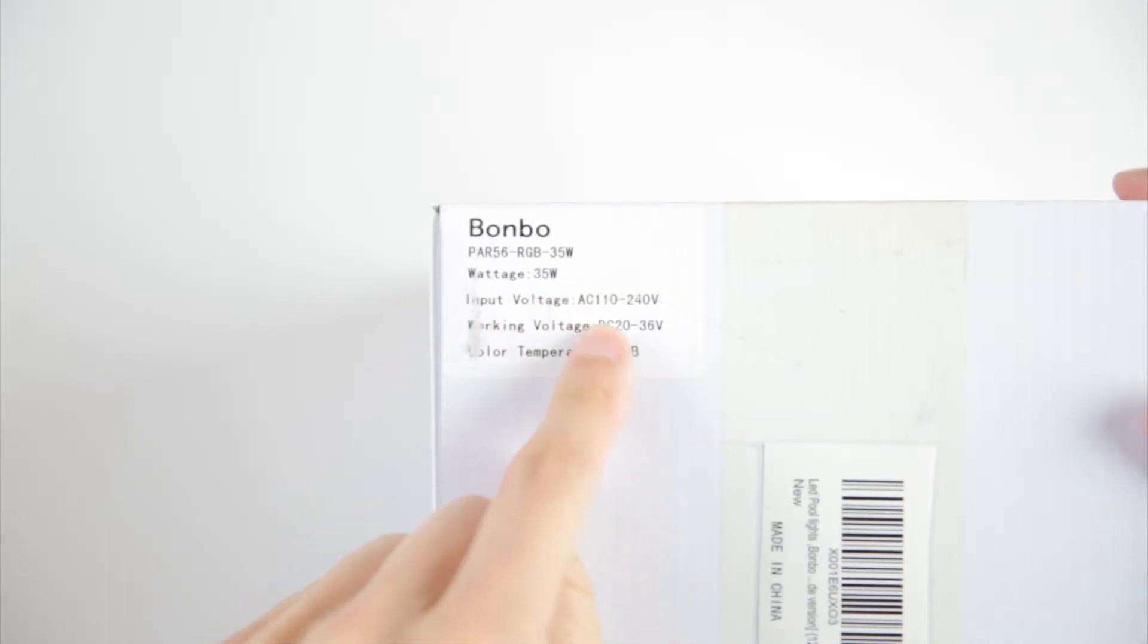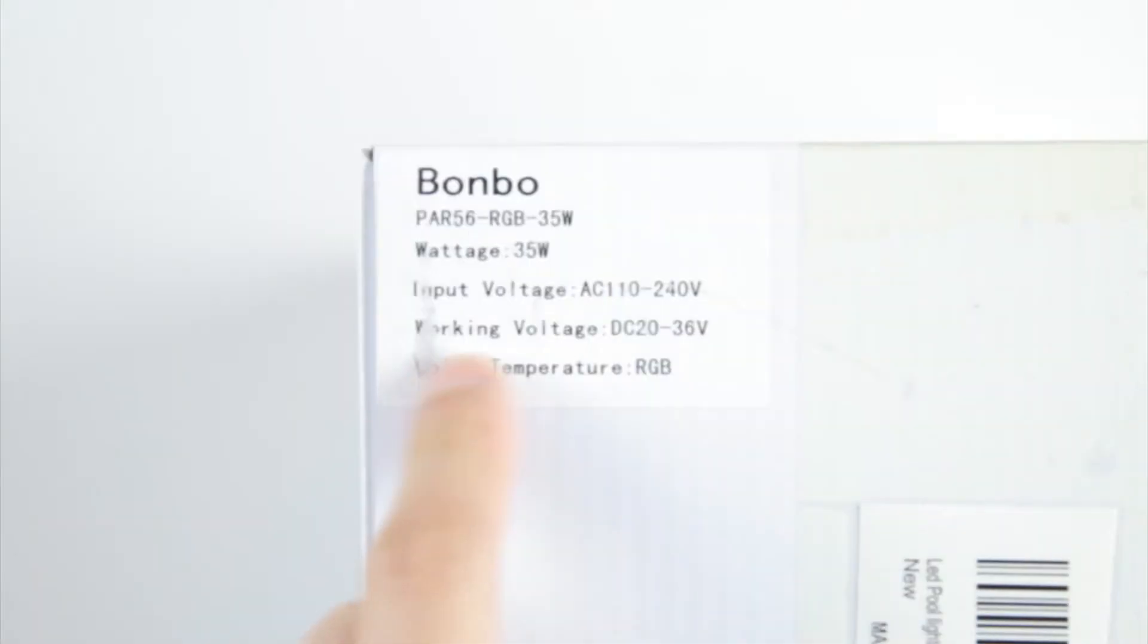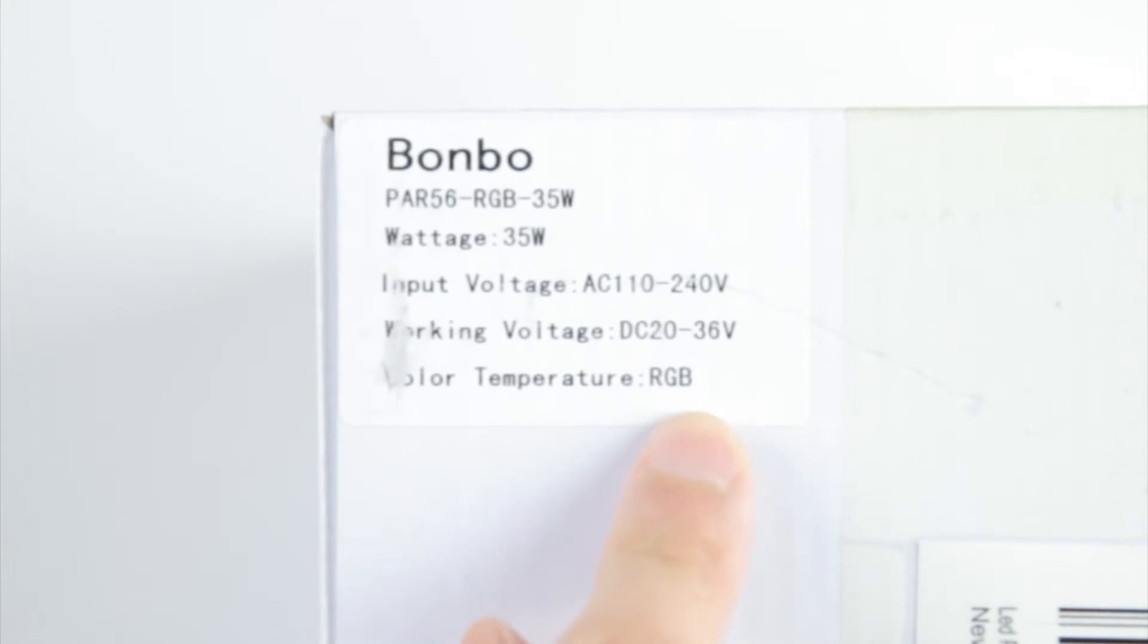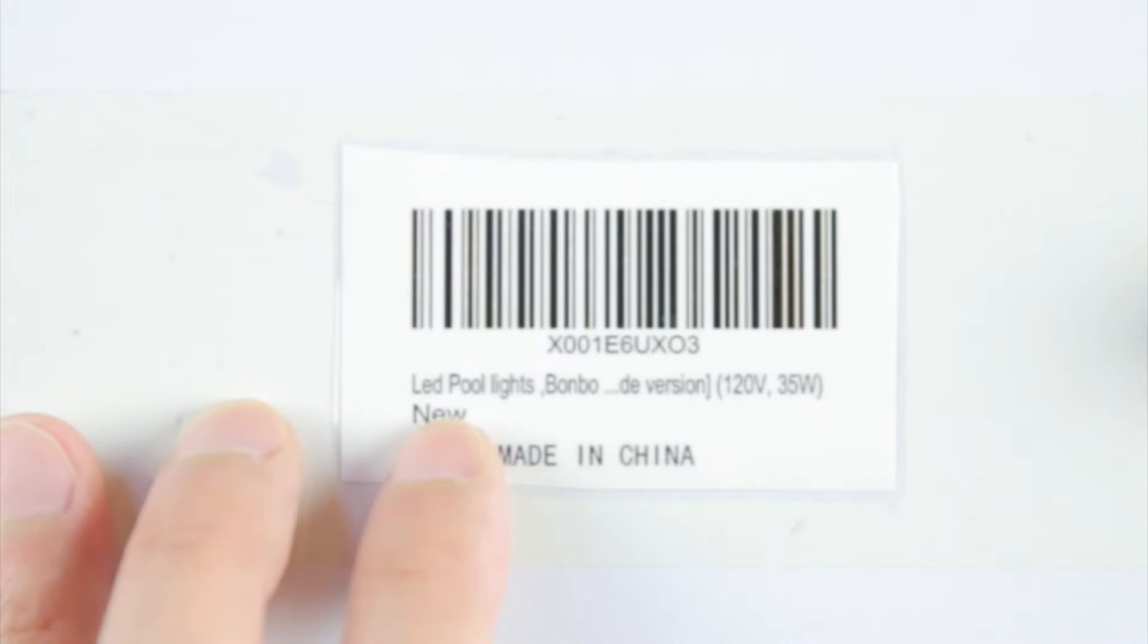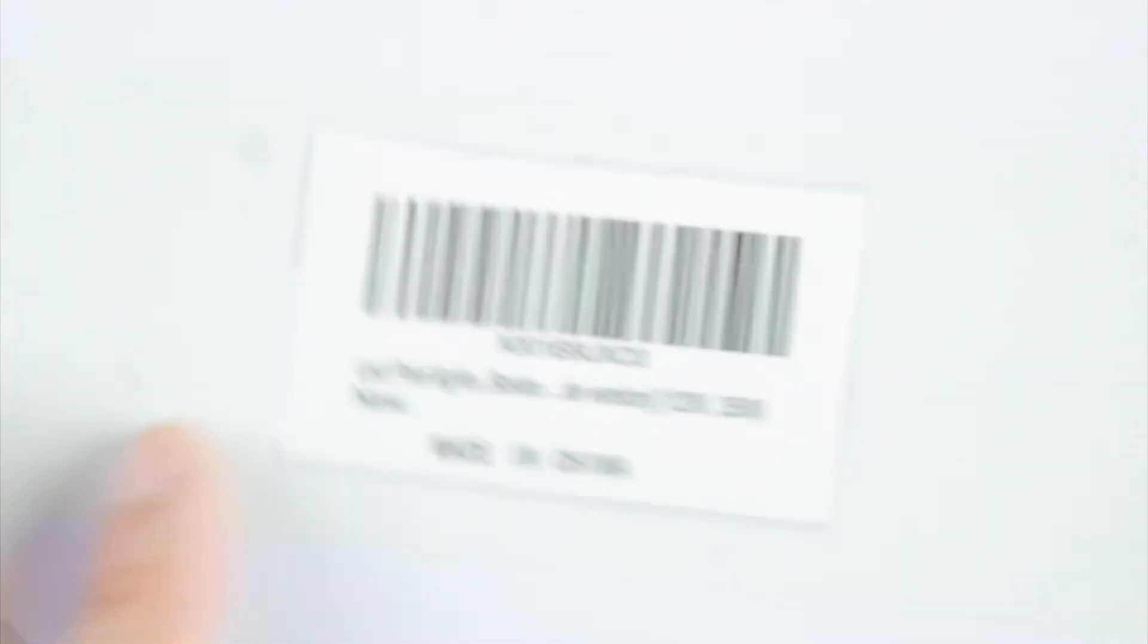So now let me just unbox this for you real quick. It does say it's 35 watt AC 110 240. Internally it works at 20 to 36 volt DC, which means it's converting AC to DC internally. Color temperature RGB, which doesn't say much because it's normally supposed to be in Kelvins. Over here it says LED pool lights, Bombo, Virgin, okay all the same thing made in China.